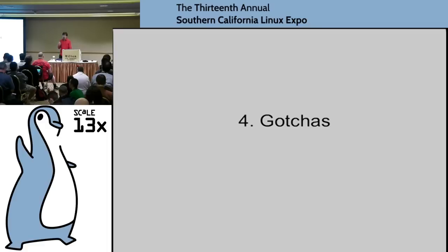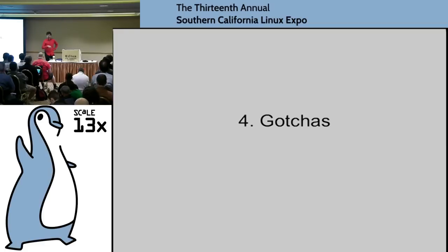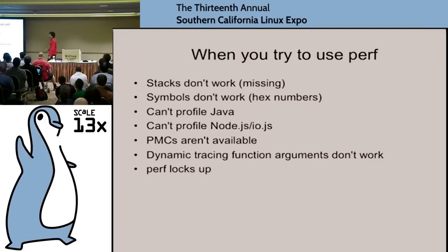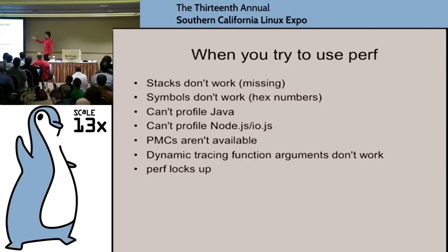When you actually go to use perf events, it turns out things are tricky. Someone challenged me to demo profiling CPUs right now and he'd been smug — he'd run into these gotchas and wanted to watch how I worked around them. So here are the real issues: stacks don't work — they're broken. Symbols don't work — if you're profiling Java or Node.js it's JIT-compiled so there are no symbols. PMCs don't work. Dynamic tracing function arguments don't work, and so on.